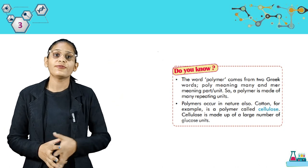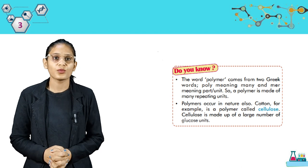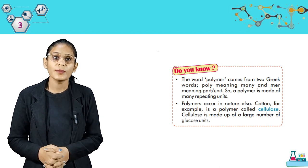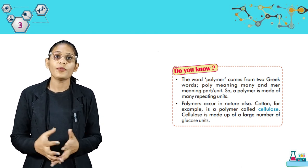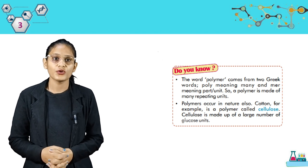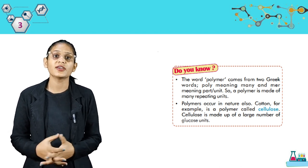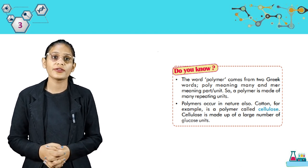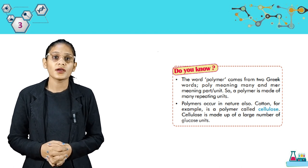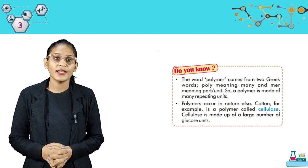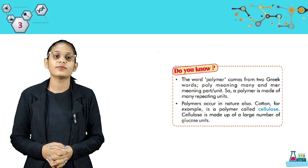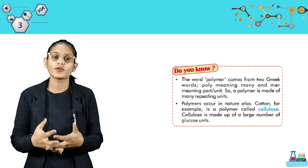Do you know? The word polymer comes from two Greek words: poly meaning 'many' and mer meaning 'part' or 'unit'. So a polymer is made of many repeating units. Polymers occur in nature also. Cotton, for example, is a polymer called cellulose. Cellulose is made up of a large number of glucose units.